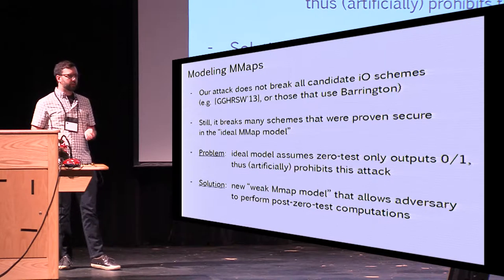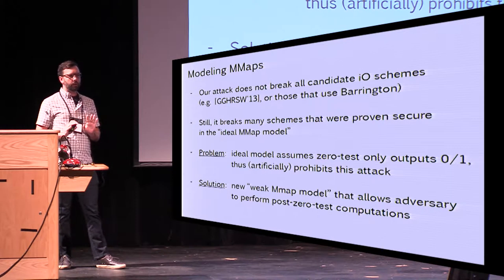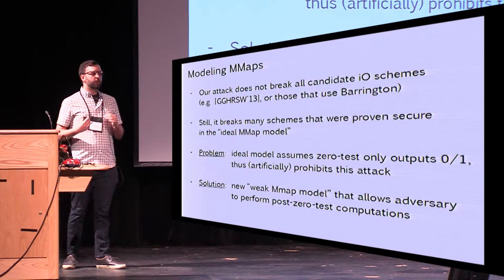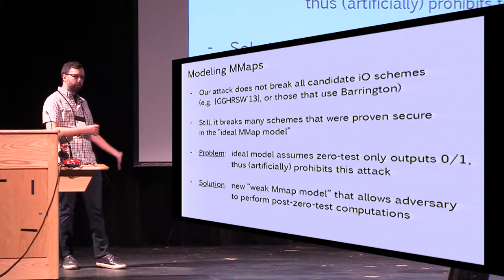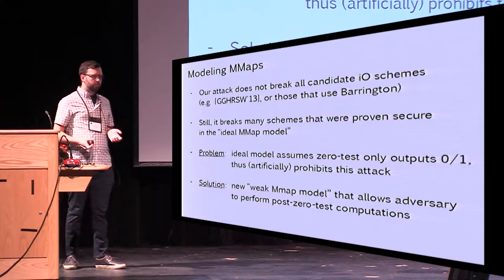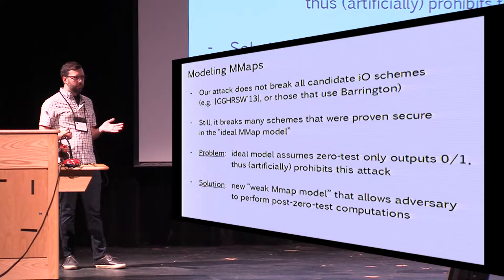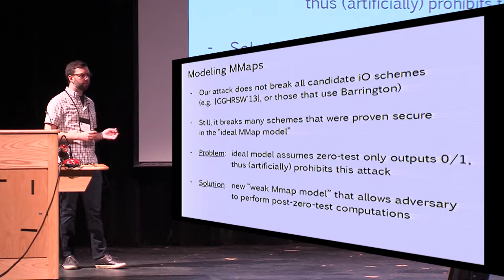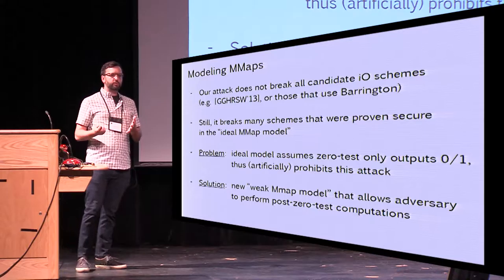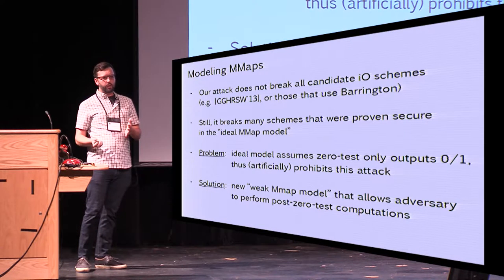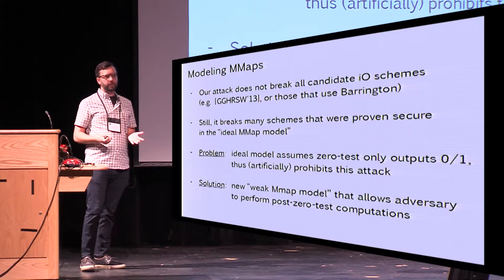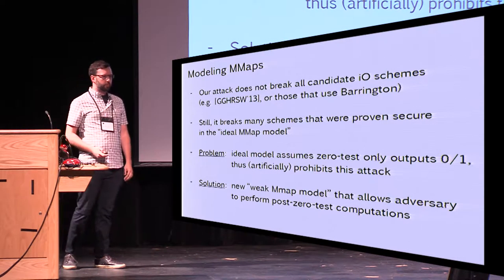The problem with the ideal model is that it assumes the zero test just outputs a bit — it pretends the leakage is not there, artificially prohibiting this kind of attack. Our solution is to provide a new weak multilinear map model that actually allows the adversary to perform post-zero test computations. This model keeps track of the formal polynomials over the underlying variables throughout all of the encoding, whereas the standard model just keeps track of the ring element and forgets how it got there.